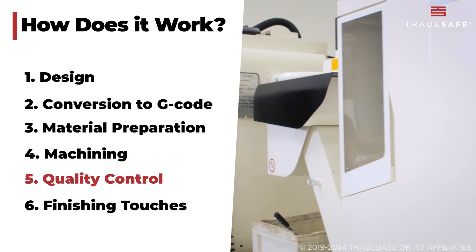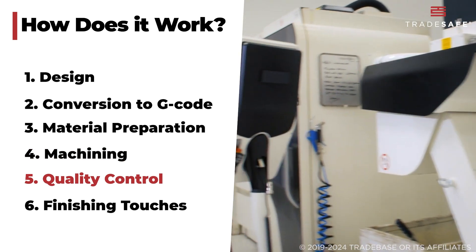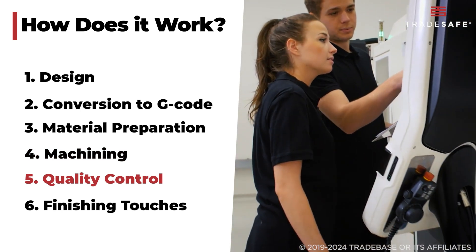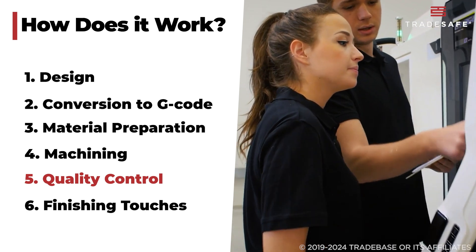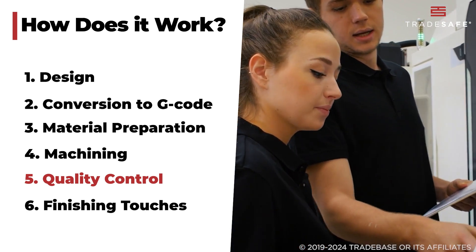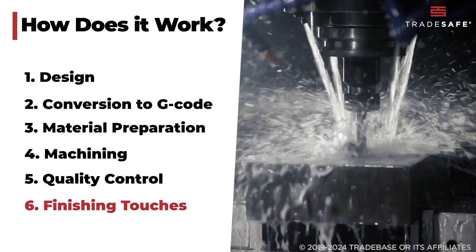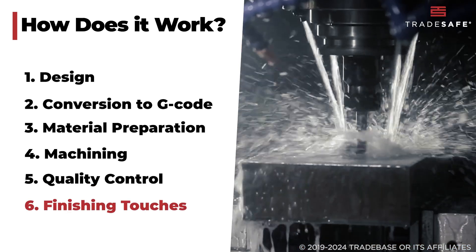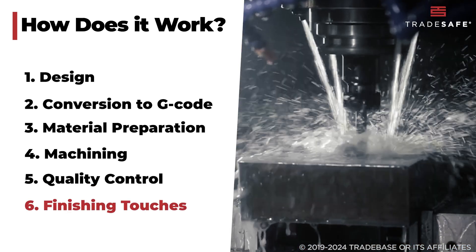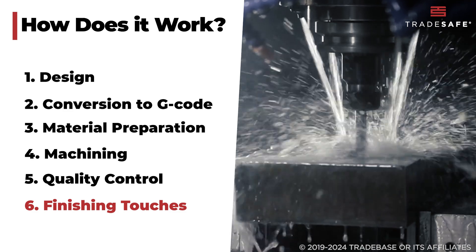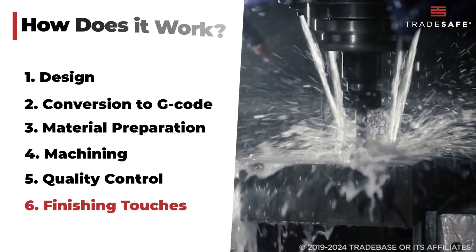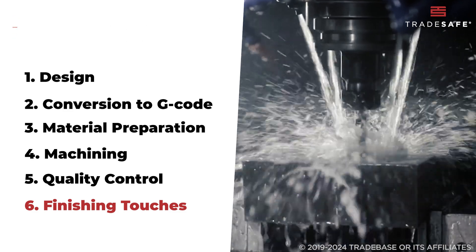Once machining is complete, the part undergoes rigorous quality control checks to ensure it meets all the required tolerances and standards. Finally, the product receives any necessary finishing touches, such as polishing or coating, to achieve the desired surface quality and durability.